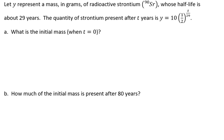We're going to start with our first example about radioactive decay. Let y represent a mass in grams of radioactive strontium, superscript 90 Sr, whose half-life is about 29 years. The quantity of strontium present after t years is y equals 10 times one-half raised to the t over 29.